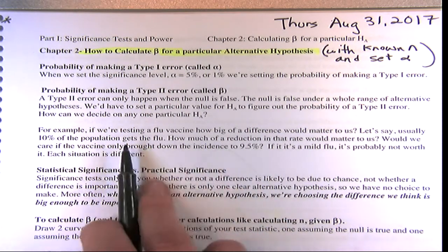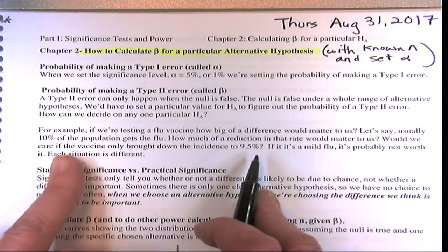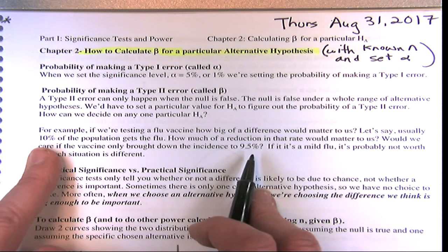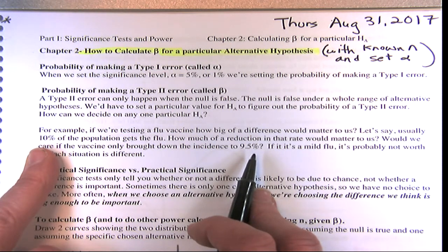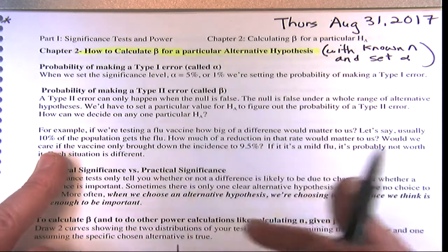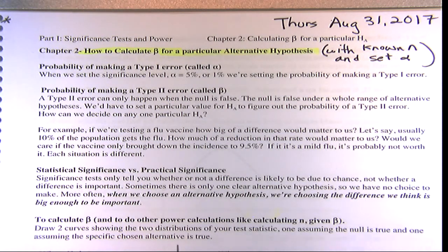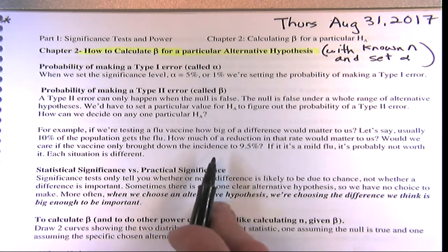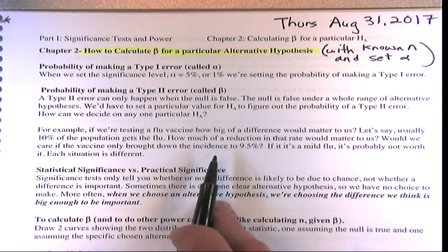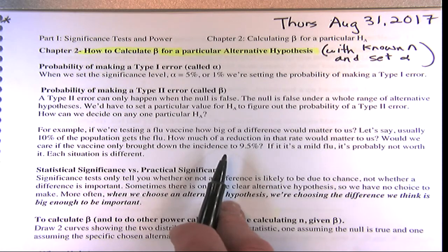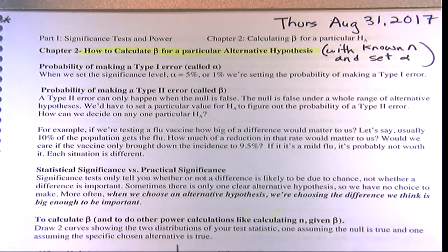If it's a mild flu, a 0.5% reduction might not matter. But if it's a deadly flu and the population is 300 million, that 0.5% reduction saves 150,000 lives. It completely depends on what you care about — how big a difference matters is completely subjective. You just have to decide on the smallest difference that matters to you.